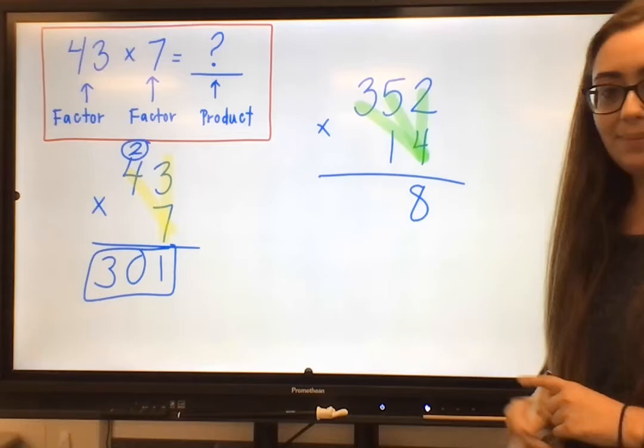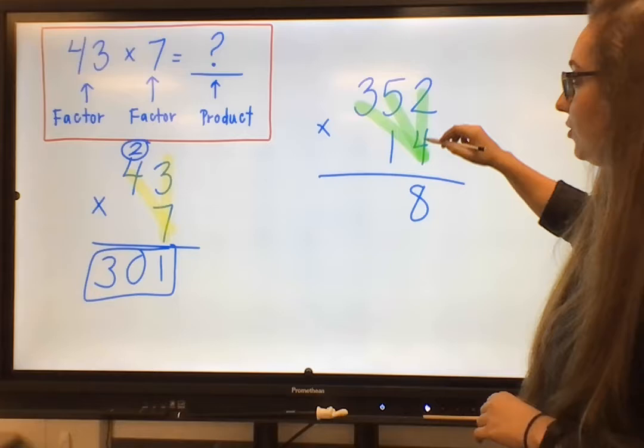So 4 times 2, I know that to be 8. I drop my 8 down below, making sure that those place values are in line with one another.